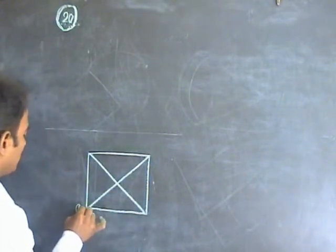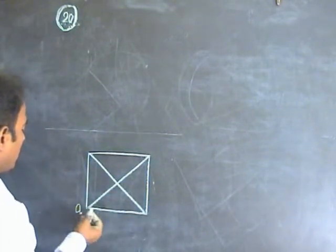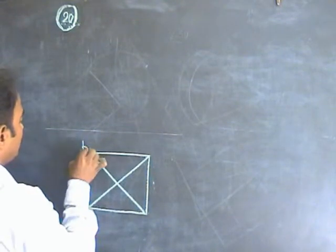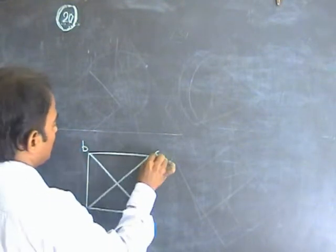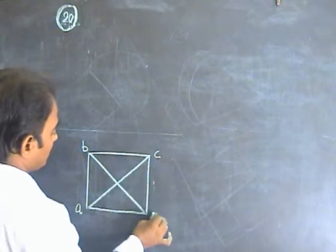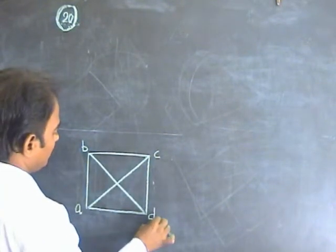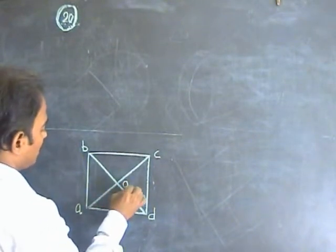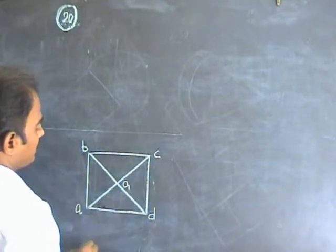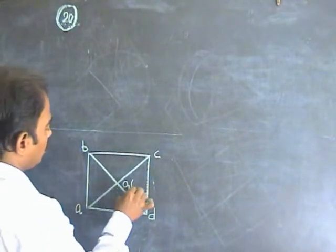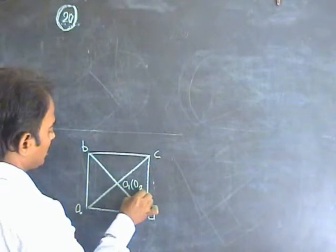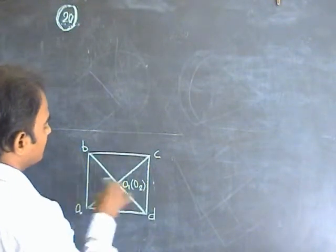We have vertices A, B, C, D, with O1 at the top and O2 at the bottom, which is not visible.